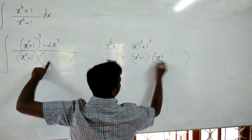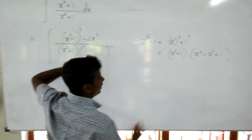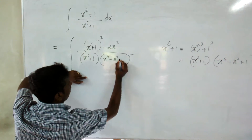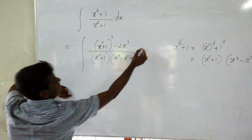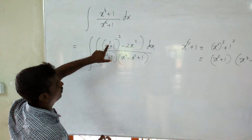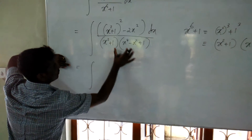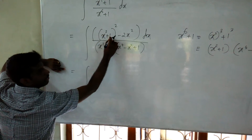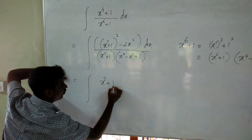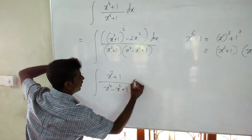...x to the power 4 minus x squared plus 1. So what we are going to do: we individually divide. The integration — you divide, then x squared plus 1 will cancel, giving (x squared + 1) divided by (x to the power 4 minus x squared + 1) dx.